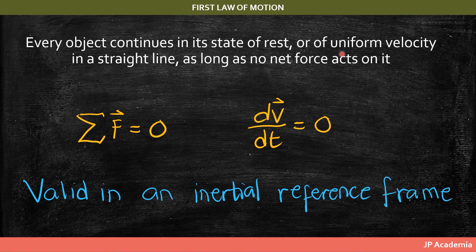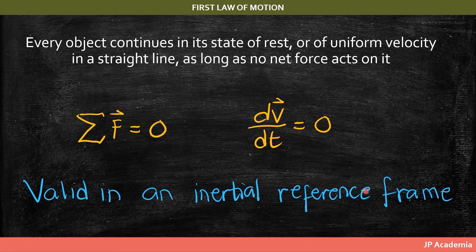Newton's first law is valid only in an inertial reference frame, meaning a reference frame that is not accelerating. We typically use a reference frame attached to the Earth's surface as the laboratory frame. Strictly speaking, this is not truly an inertial frame since the Earth is rotating and thus accelerating, but we assume the effect is negligible for our calculations.